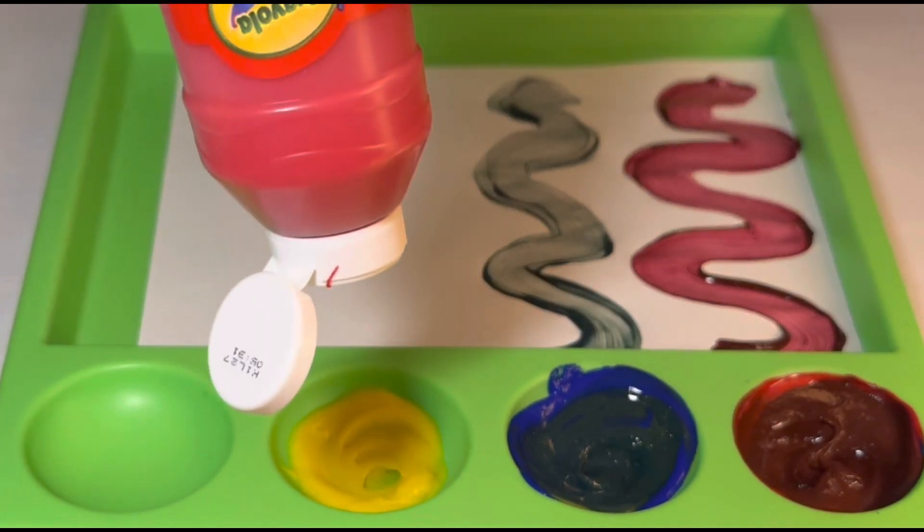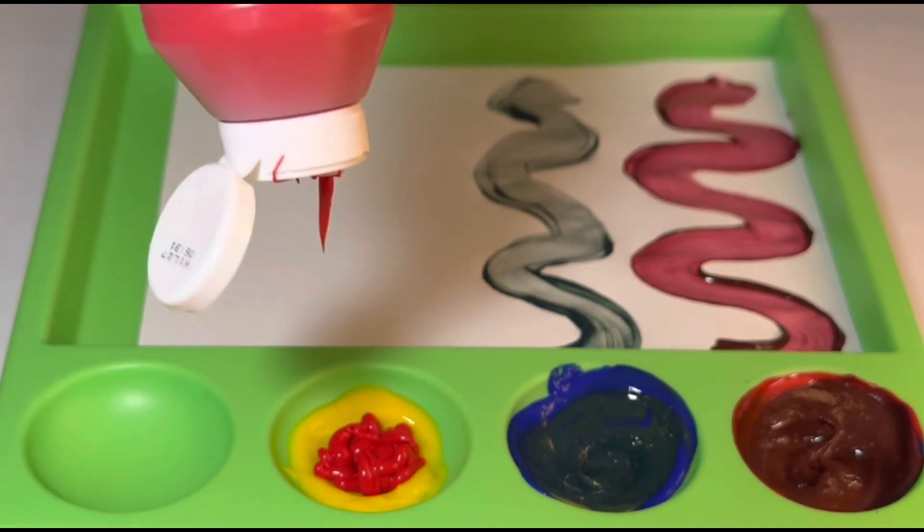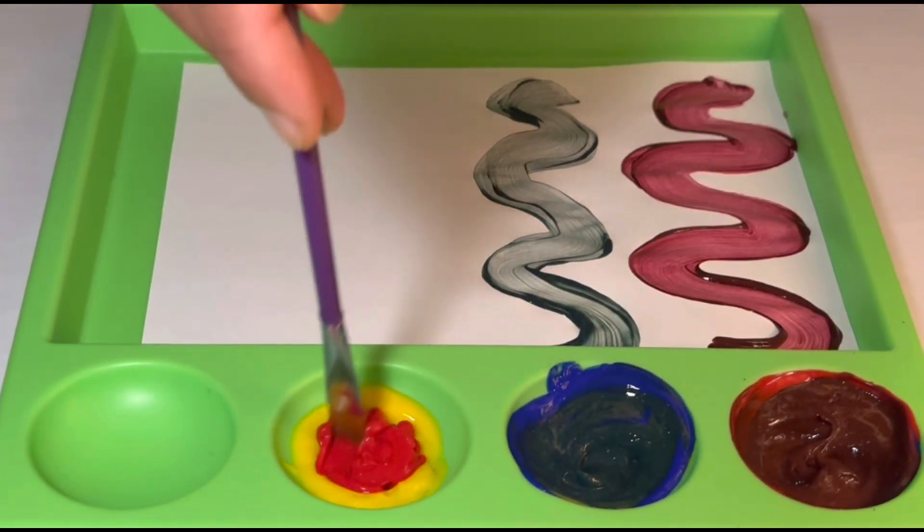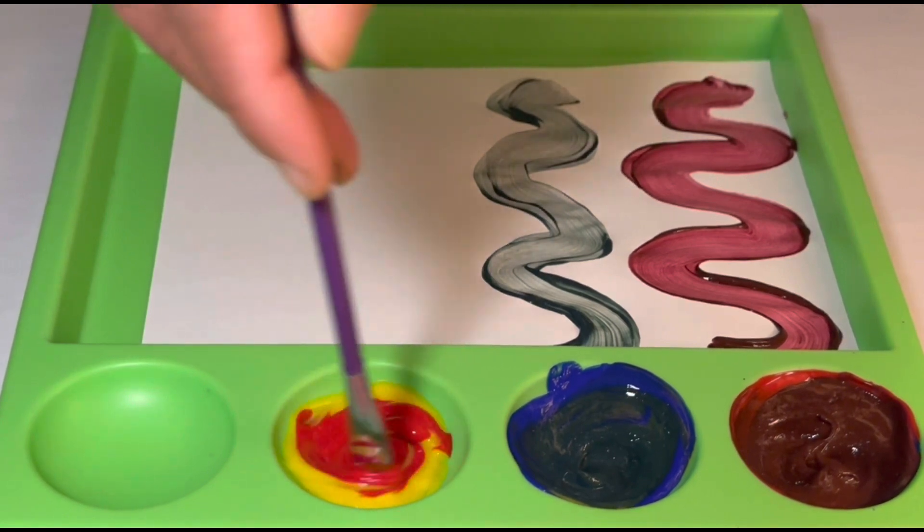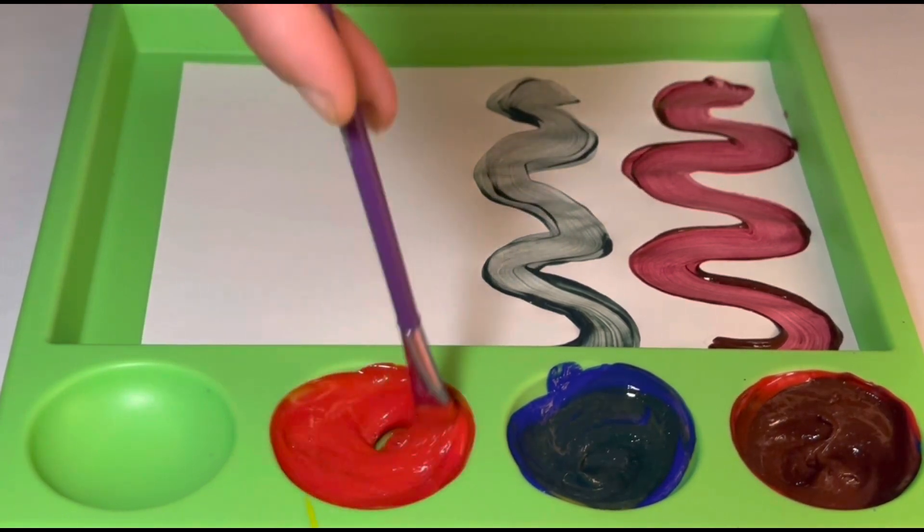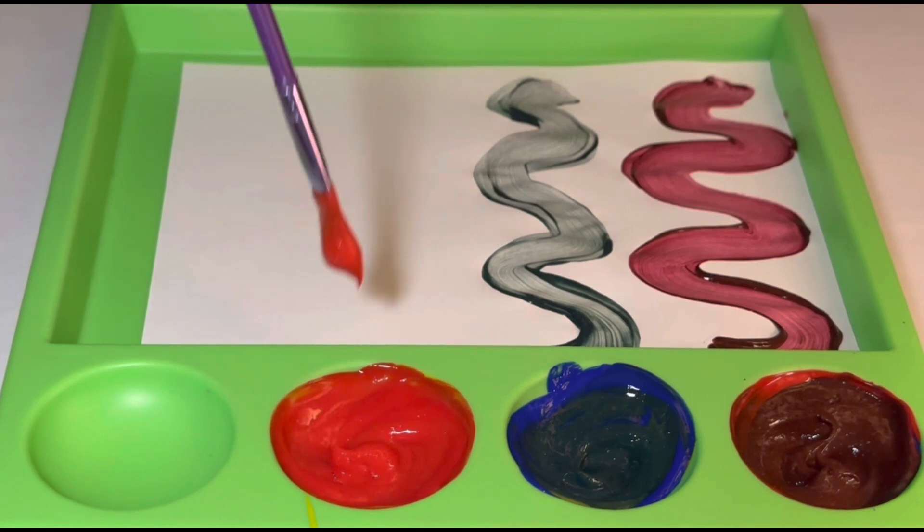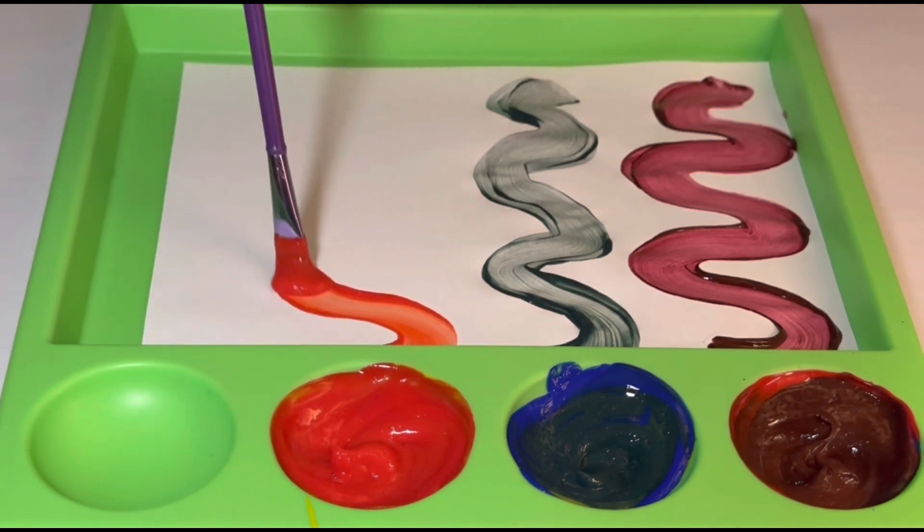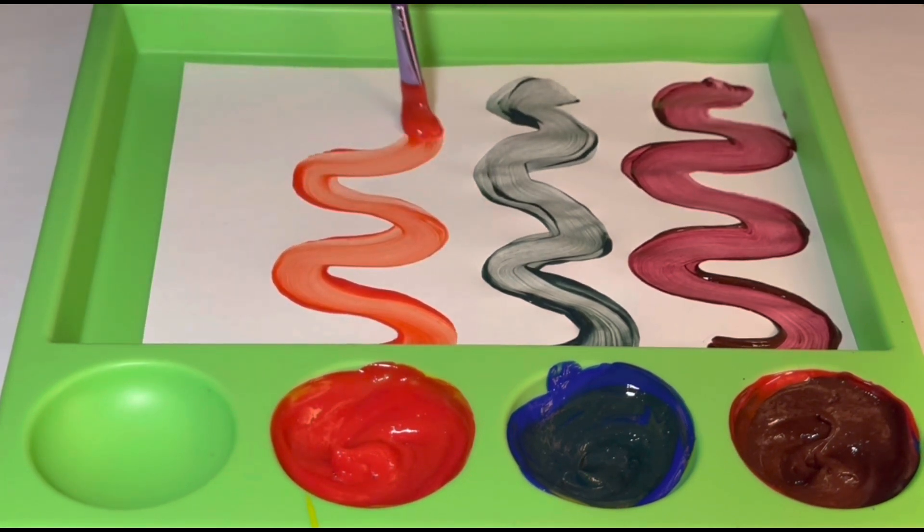Now, for our third secondary color, we will mix red and yellow. When mixing red and yellow, we'll get a nice bright color, which is orange.